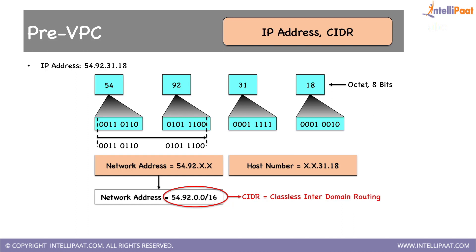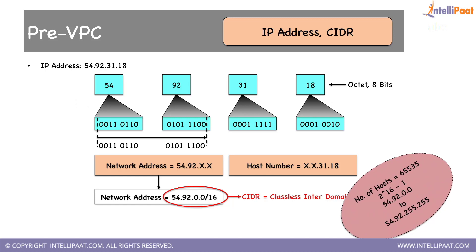CIDR notation tells you how to denote a network address — just add a slash and put the number of bits allocated for the network portion. In our case it is 16. Now, how many hosts or devices can be placed inside this network? We have the last two octets or 16 bits available for hosts. The maximum number of hosts is 65,535 — or 2 to the power of 16 minus 1. This is another way to find out the maximum: for 8 bits it's 2 to the power of 8 minus 1, which equals 255. CIDR notations are mainly used to denote a network address.